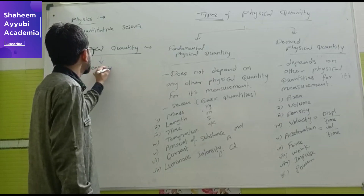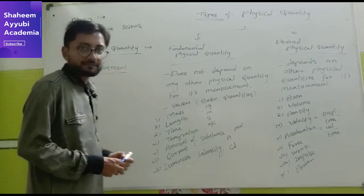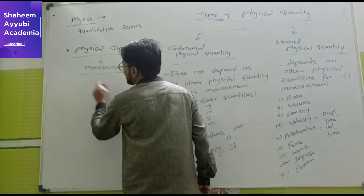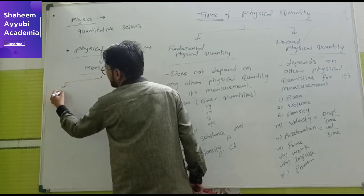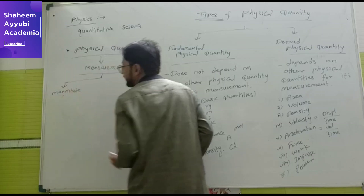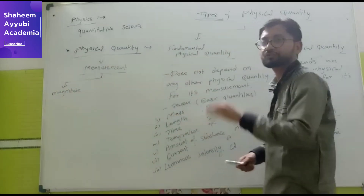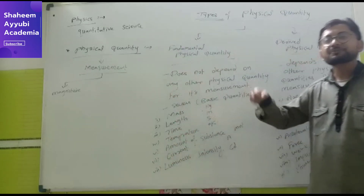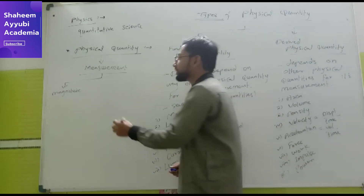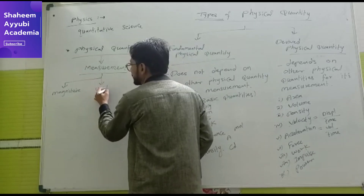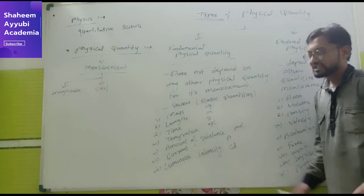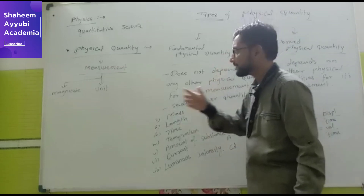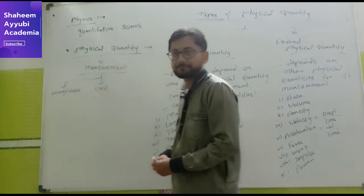Now, measurement. For measurement we need to study three things. Number one is magnitude — any digit, zero, positive, or negative. For example, if mass is 50 kg, then 50 is the magnitude and kg is the unit. The second thing is unit — a universally accepted standard used for the measurement of any physical quantity.